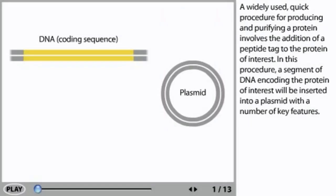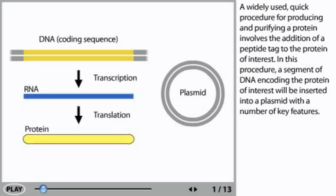A widely used quick procedure for producing and purifying a protein involves the addition of a peptide tag to the protein of interest. In this procedure, a segment of DNA encoding the protein of interest will be inserted into a plasmid with a number of key features.